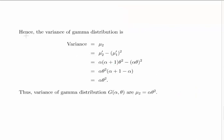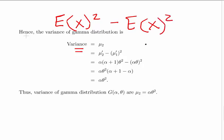We can now calculate the variance. The variance equals the expected value of x squared minus the square of the expected value of x. We have E[x²] = alpha(alpha+1)theta² and (E[x])² = (alpha*theta)² = alpha²*theta². Simplifying gives alpha times theta squared, which is the variance of the Gamma distribution. This also dovetails with cumulant generating functions, which will come up in later material.